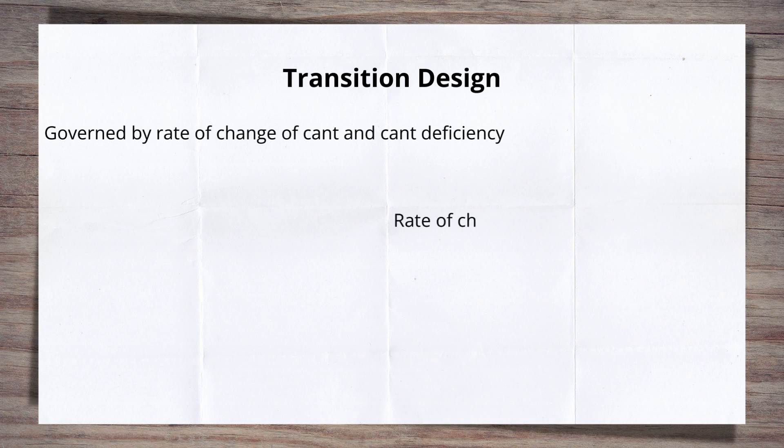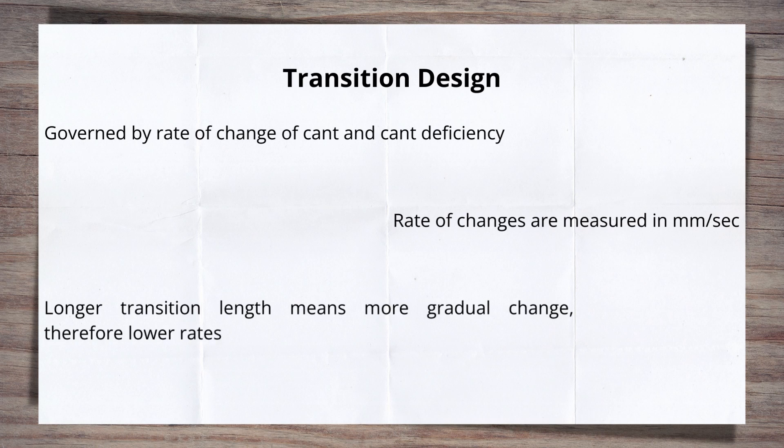The design of transitions is governed by the rate at which cant, and therefore cant deficiency, changes. This is measured in millimetres per second. The longer the transition length, the more gradually the cant can be changed, giving lower rates of change values.